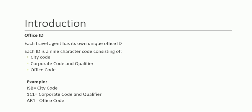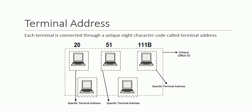Every travel agent will have this kind of 9-character code which is used to identify different travel agents around the world. To know your office ID, you can link yourself with your travel agent or go over the trial version of Amadeus if it is available to you. The Amadeus system also allows different terminals to connect to each other through a unique 8-character code called the terminal address. For example, 20 and 51 are specific terminal addresses, and TRIPLE1B is the unique office ID.